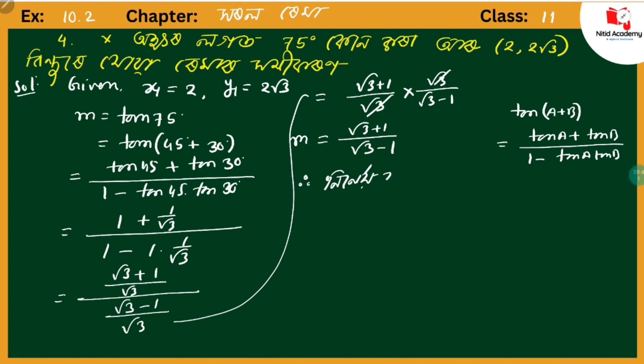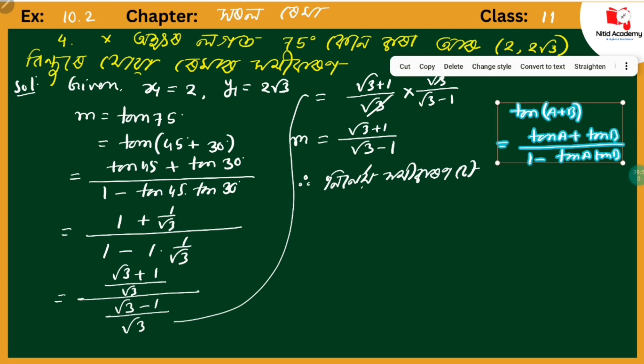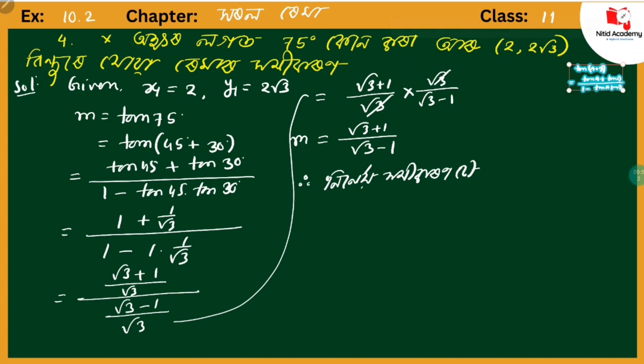The formula for a line is y - y₁ = m(x - x₁). We'll substitute our values into this equation.